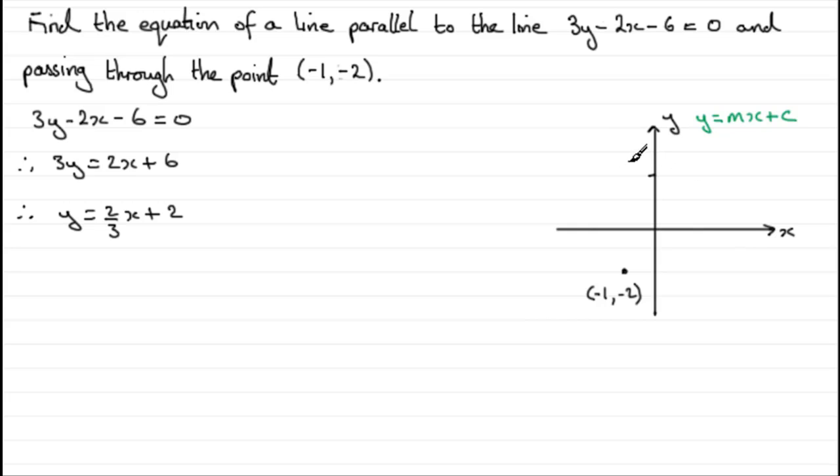Let's say that's the point where y is 2. So a gradient of 2 thirds is going to be a line coming through the 2 something like that. A positive gradient. So what I'm looking for now is a line passing through minus 1, minus 2 which is parallel. So that line is going to look something like that.